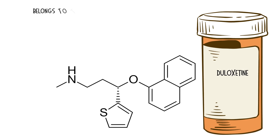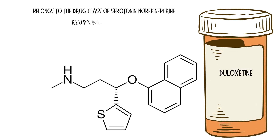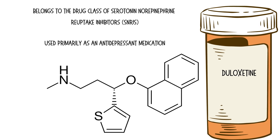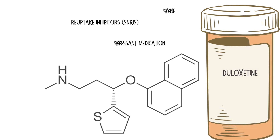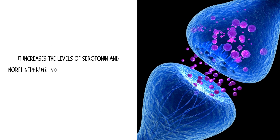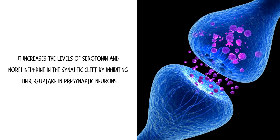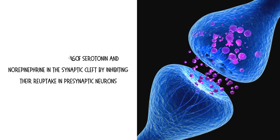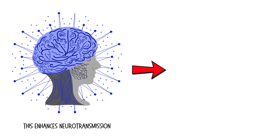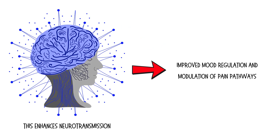Diloxetine belongs to the drug class of serotonin-norepinephrine reuptake inhibitors and is used primarily as an antidepressant medication. It increases the levels of serotonin and norepinephrine in the synaptic cleft by inhibiting their reuptake in presynaptic neurons. This enhances neurotransmission, leading to improved mood regulation and modulation of pain pathways.